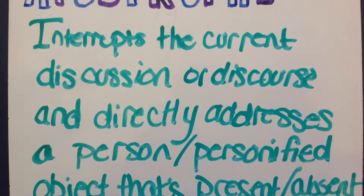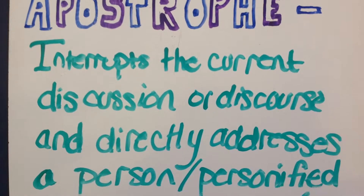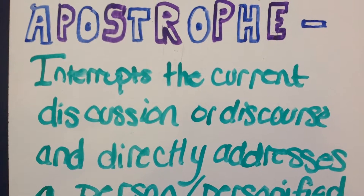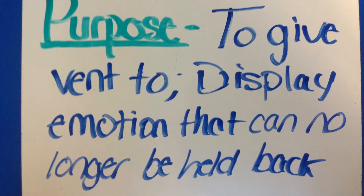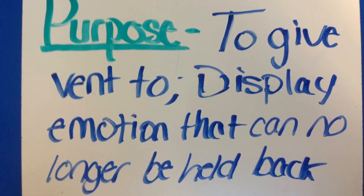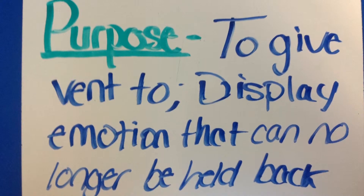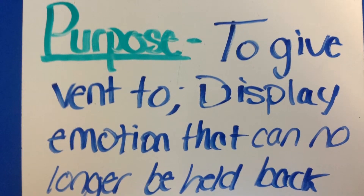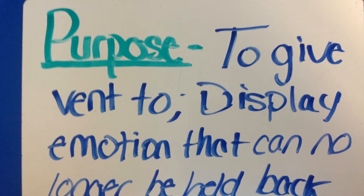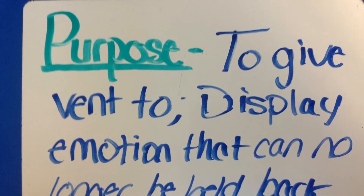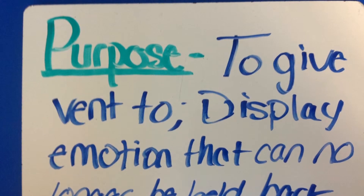Apostrophe interrupts the current discussion or discourse and directly addresses a person or personified object that can be either present or absent. The purpose of apostrophe is to give vent to or display emotion that can no longer be held back. Apostrophe is not used in argumentative or intellectual writings, but more often in emotional writings to display how the writer feels about somebody or something.